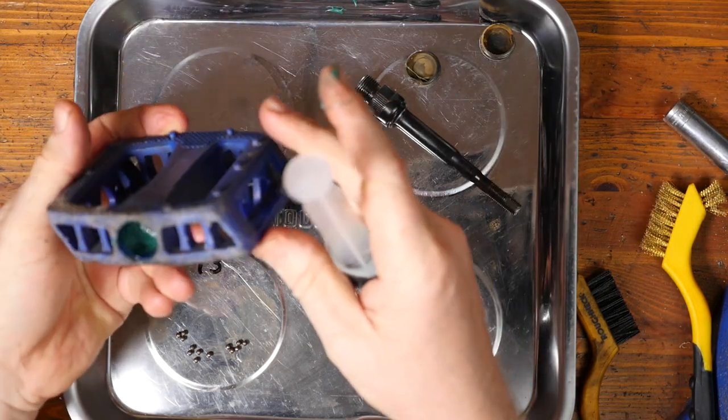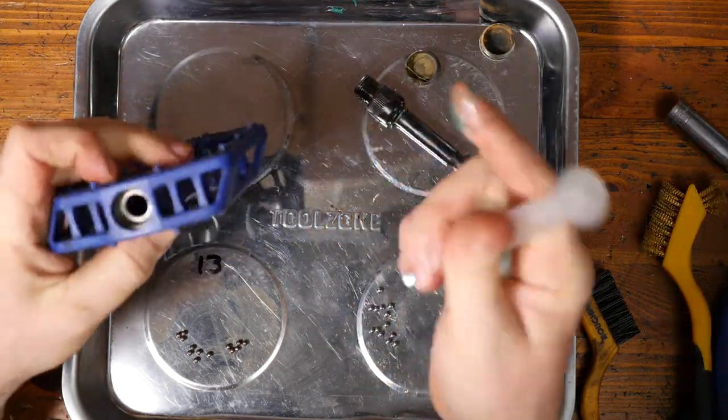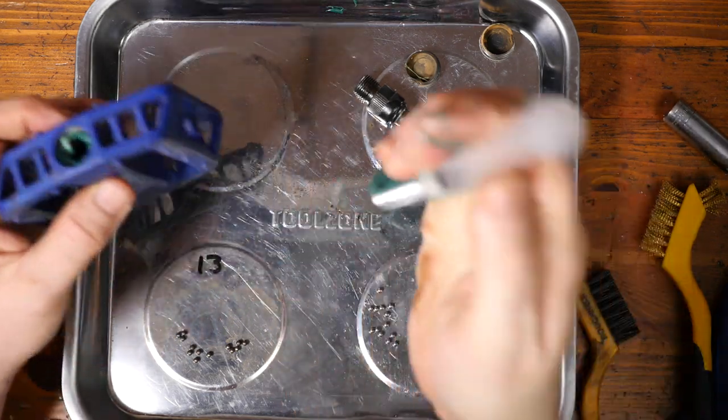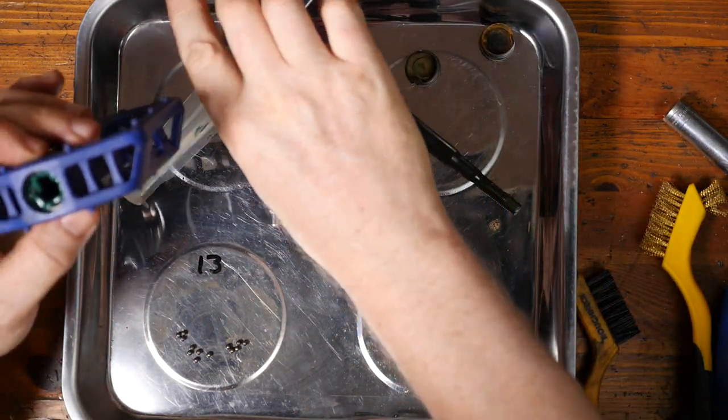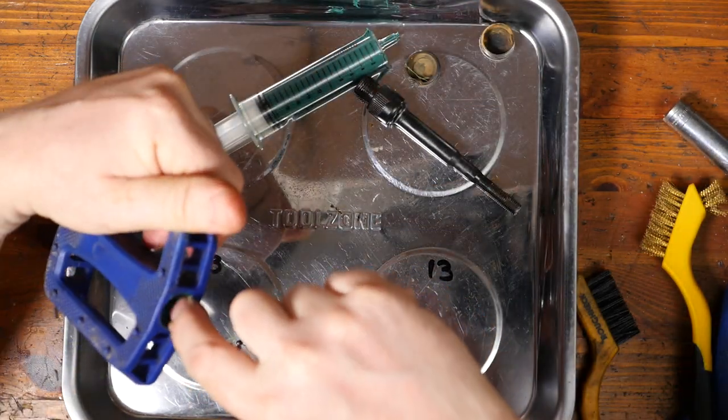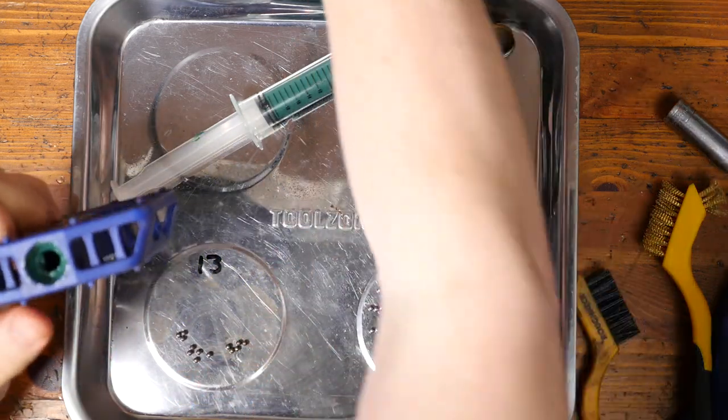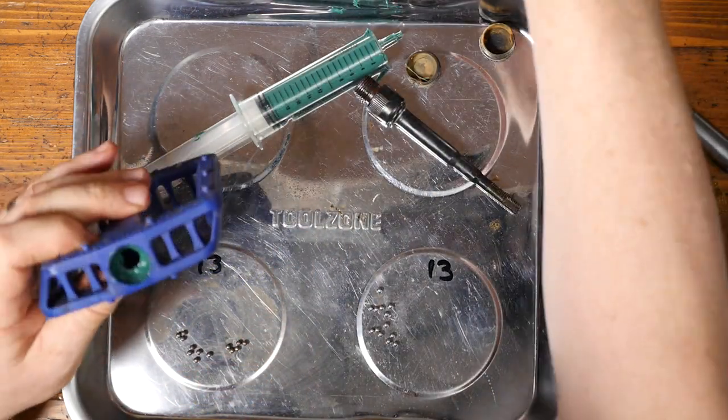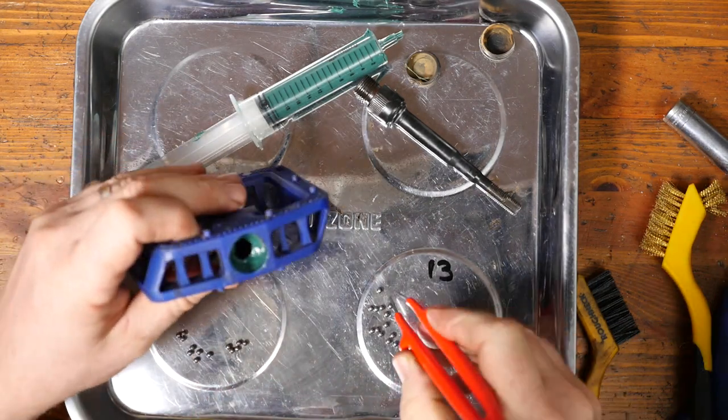And then do the same at the other end. I've put the grease in a little syringe just to make it easier to squirt it in there. I think it's a Park Tool grease I'm using there, just a basic standard one. So now the grease is there, that will hold them.